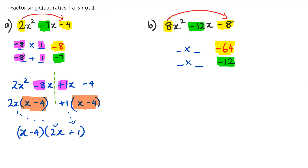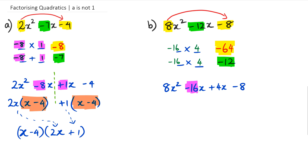After working it out, the two numbers are negative 16 and positive 4 — negative 16 times positive 4. So we're going to rewrite this quadratic. Instead of that negative 12x we're going to replace it with negative 16 and 4. So we still have 8x squared but instead of negative 12x we write it as minus 16x plus 4x and minus 8.